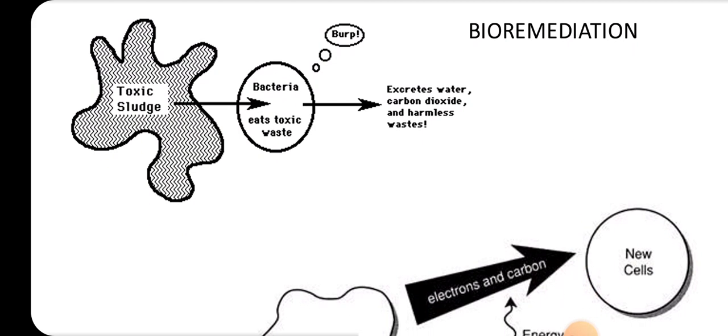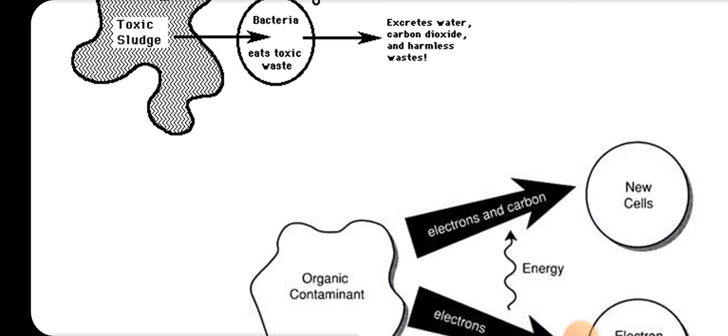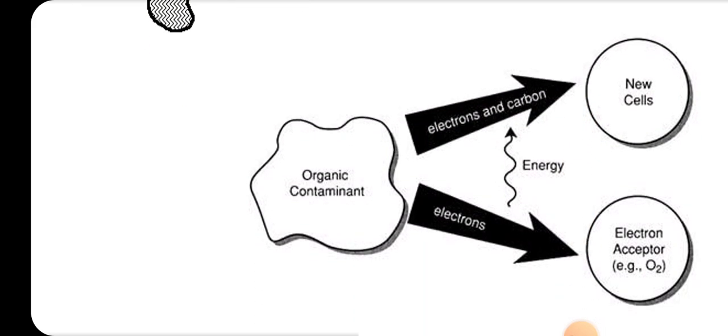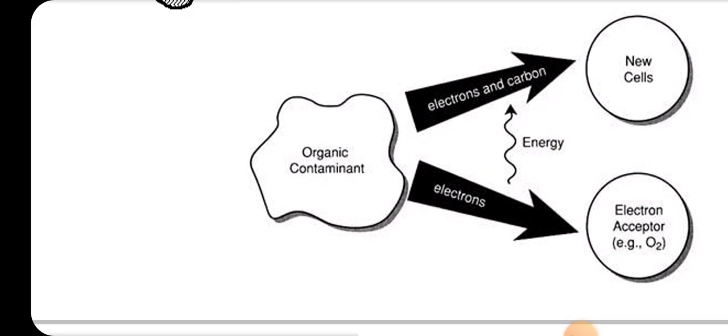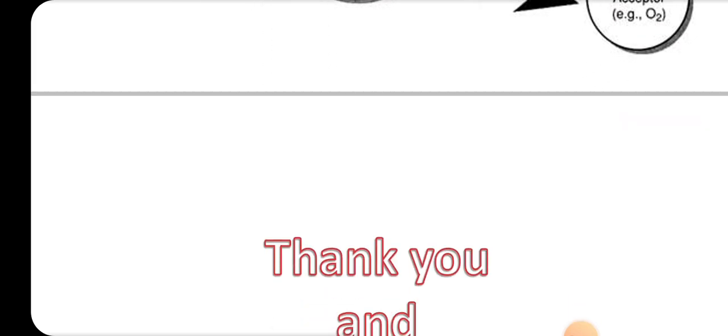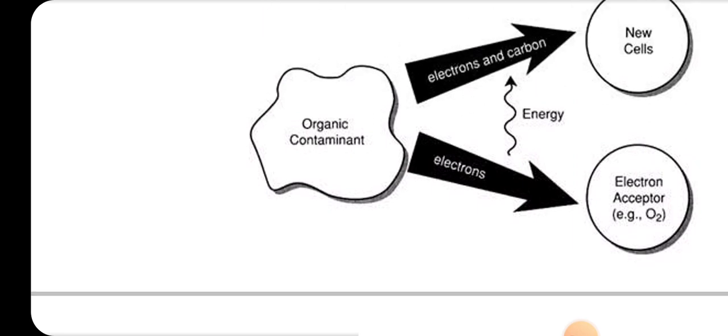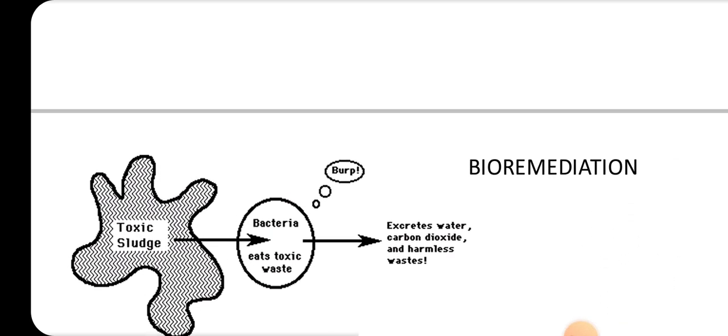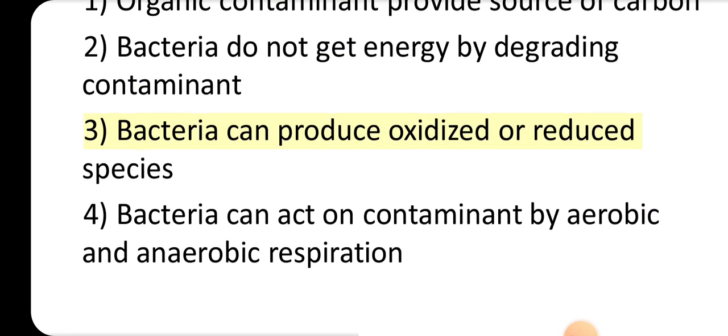NET 2019. 1. Organic contaminant provides a source of carbon. 2. Bacteria do not get energy by degrading the contaminant. 3. Bacteria can produce oxidized...